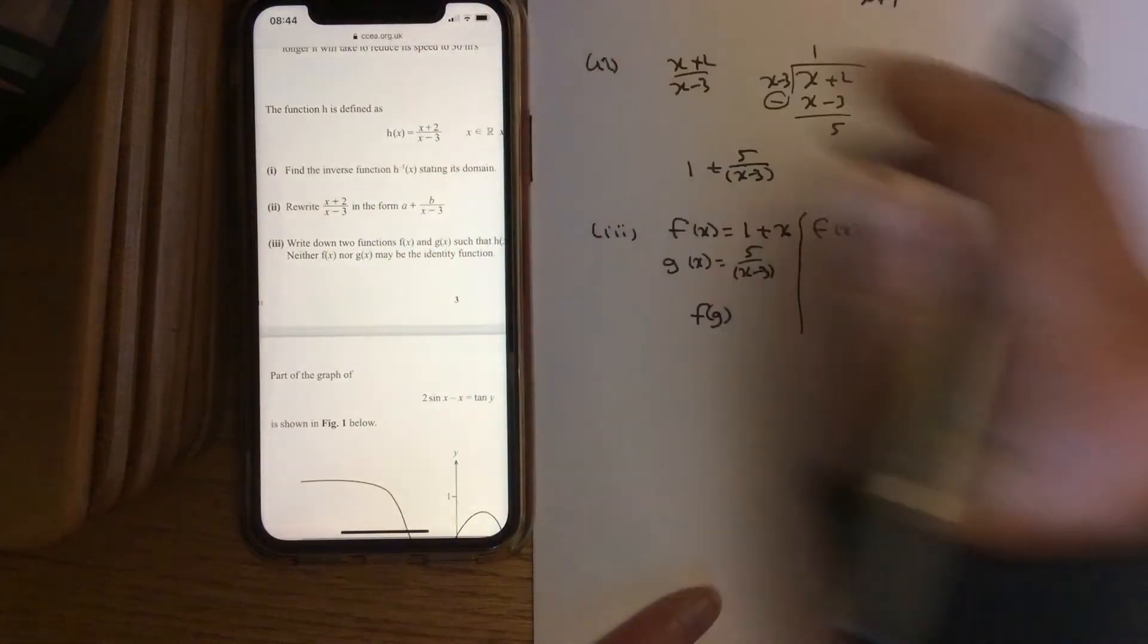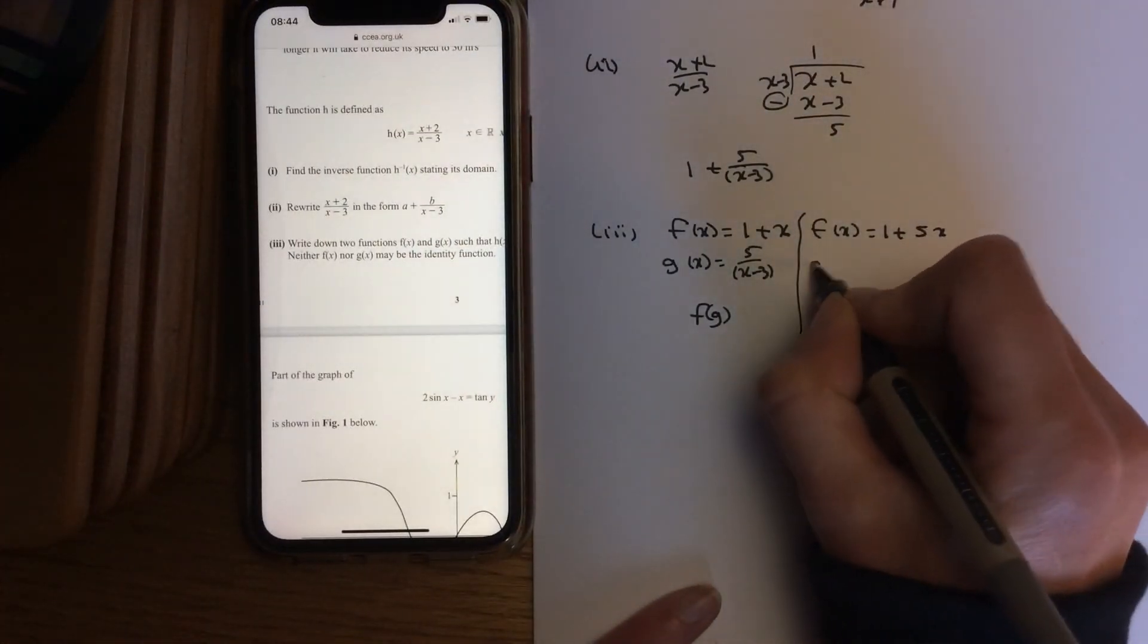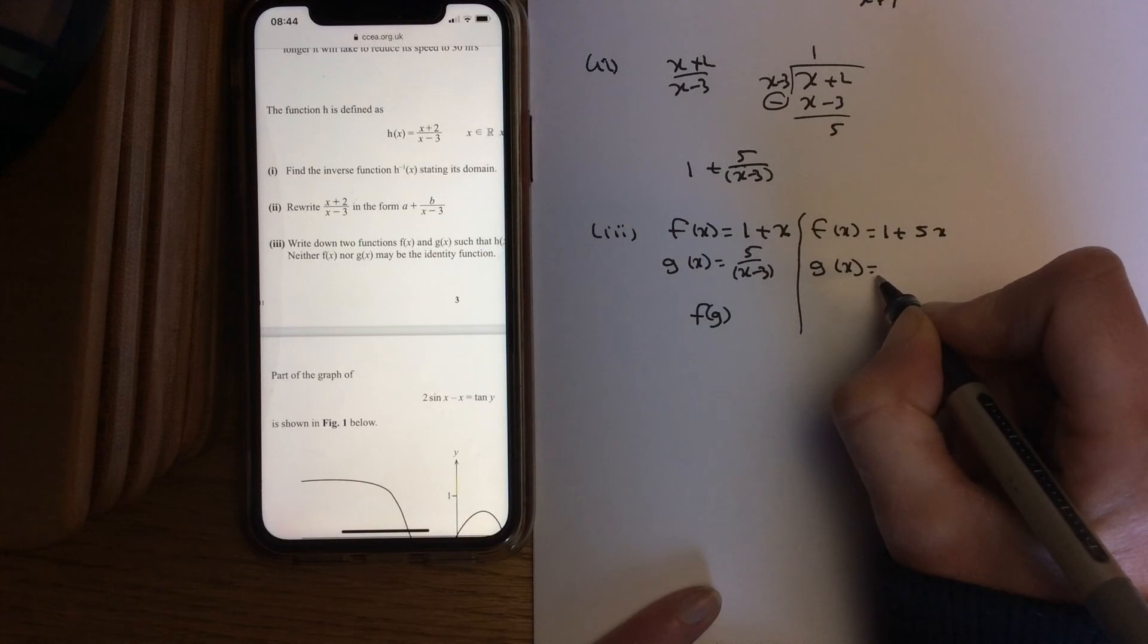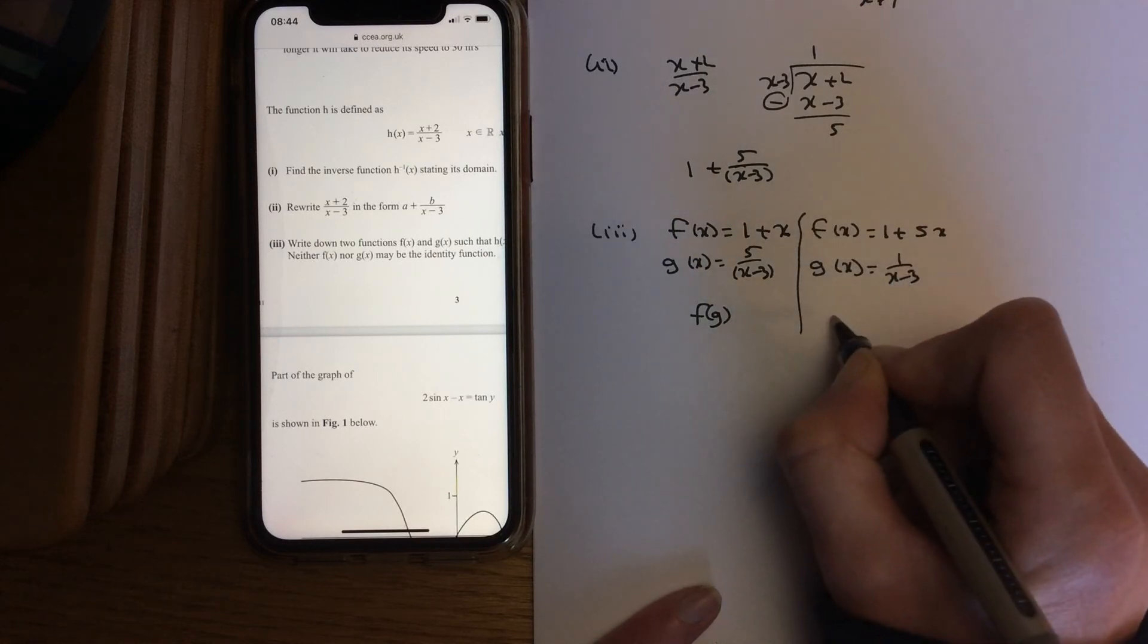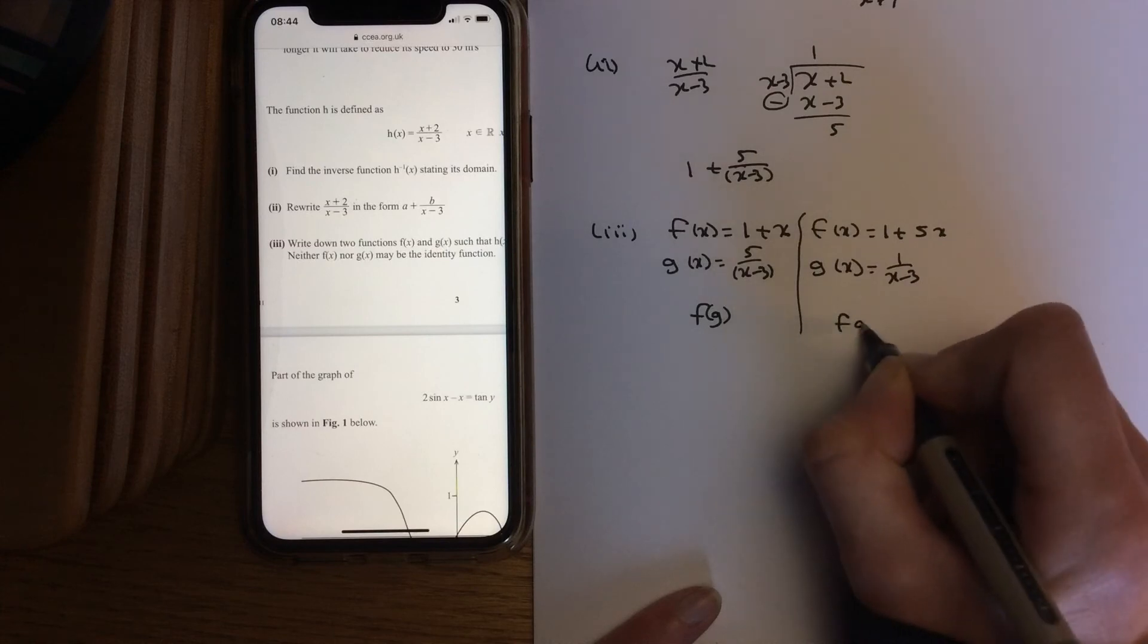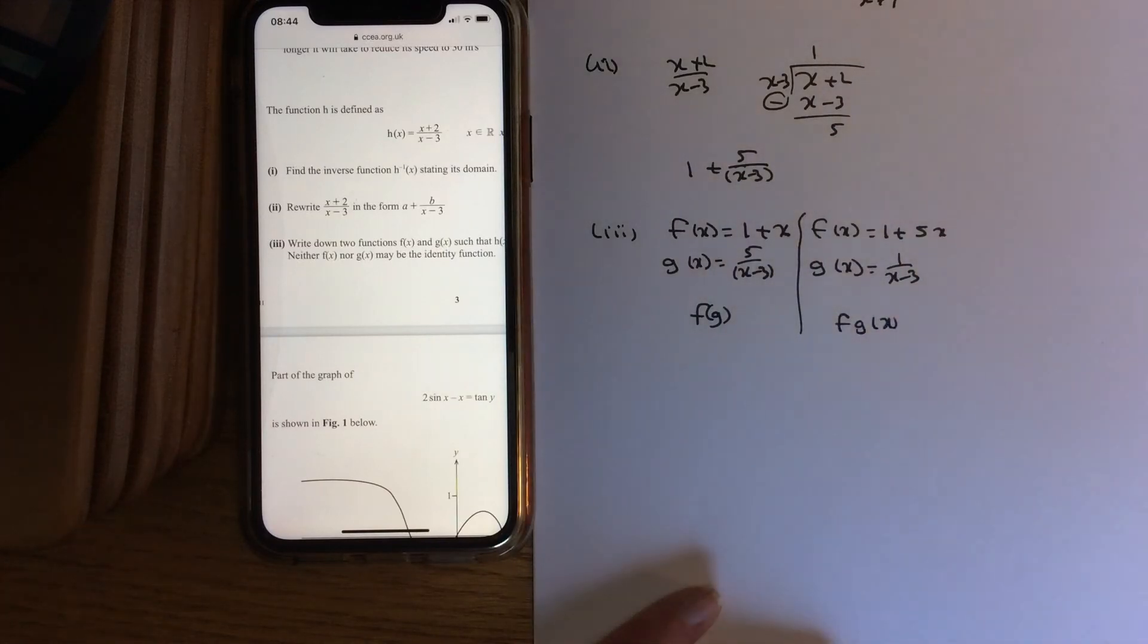And your g function then would be 1 over x-3, so you would put your g into your f and you would get the same number.